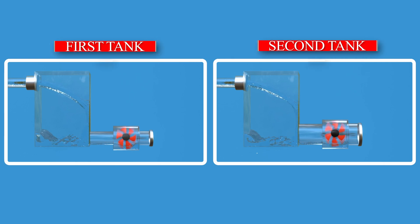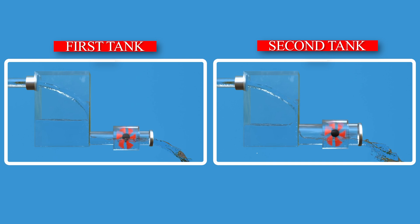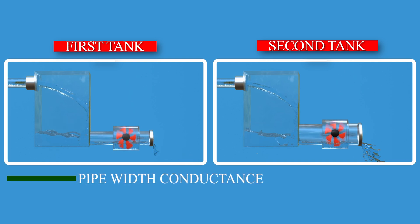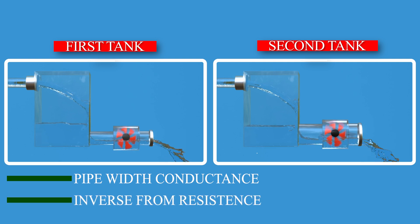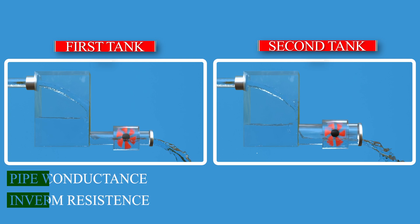This concept becomes clearer with a water tank analogy. In the first tank, a thin pipe restricts water flow, leading to slower turbine speed. In contrast, the second tank has a wider pipe allowing more water flow and hence a higher turbine speed. Here, the pipe width represents conductance, the inverse of resistance, and the turbine speed represents current across a circuit. As width increases, conductance increases, resistance decreases, and consequently the current across the circuit increases.